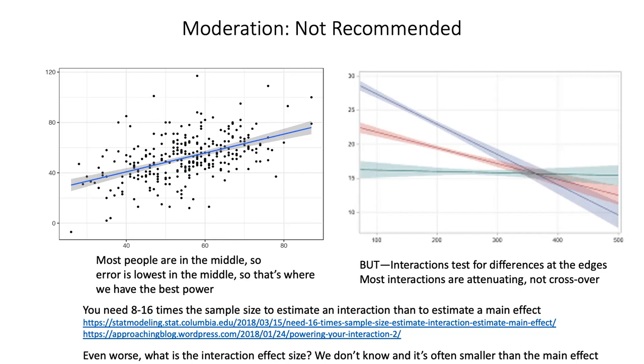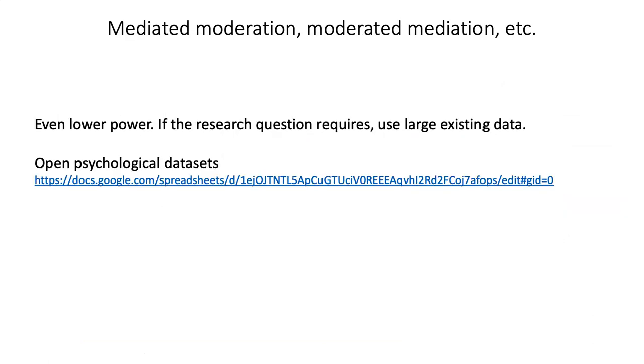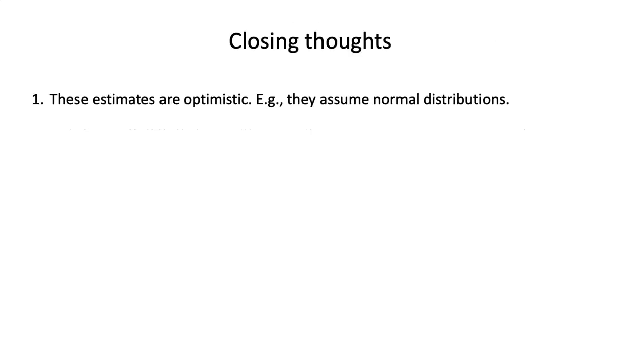Last note of caution. What is the interaction effect size? Should we use the same 0.3 we used earlier? There's often not very much literature to say what the interaction is. Mostly interaction effects are smaller than main effects, so that increases the required sample size even further. What about mediated moderation, moderated mediation, et cetera? Those are even harder. If your research question requires these, I recommend use large preexisting data. For example, this list of open psychological data sets. I have run both bachelor's and master's theses using preexisting secondary data. Some of these data sets have 10,000, 40,000 people. Then you can test these kinds of designs with good power.